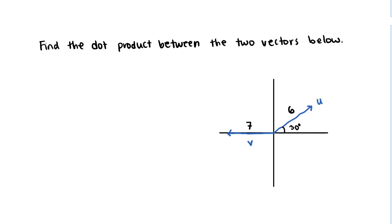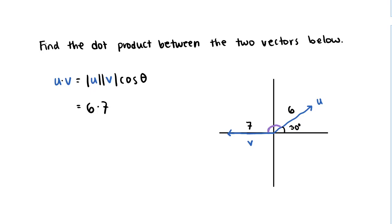We have two different definitions for the dot product, and we've already practiced one. Let's use the other. I've got two vectors u and v, and I want to compute u dot v using the definition where we take the magnitude of u, the magnitude of v, and multiply those together with cosine of the angle between them. In this case, the magnitude of u is 6 — that's the length of that vector. The magnitude of v is 7. We want cosine of the angle between u and v.